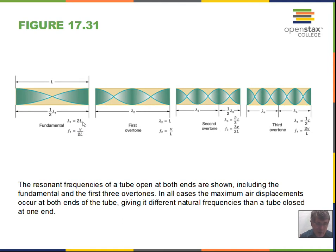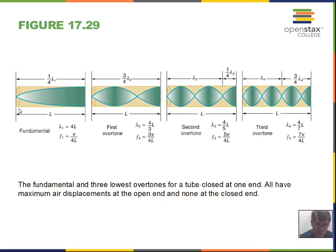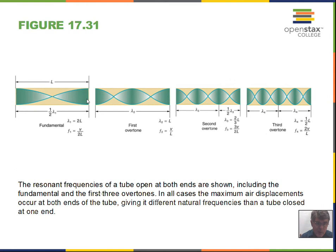You can detect this yourself: take an empty roll of paper towels, hold that tube to your ear and listen for a particular tone — you'll hear the frequency V over 2L, where L is the length of the paper towel roll. Then put your hand over the far end to create a closed-pipe situation, and the fundamental frequency you hear will be V over 4L — a lower tone.